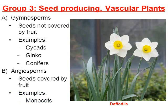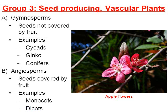Examples of angiosperms — which you'll see in another video — would be monocots, such as daffodils, and dicots, such as apple trees. But let's go ahead and focus our attention today on gymnosperms.